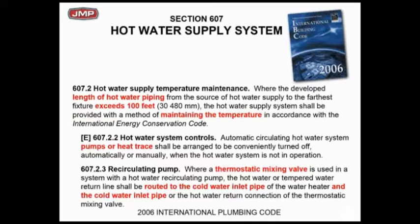The old IPC/ICC code that most states still follow said 100 feet between the point of recirculation and the fixture. The 2012 IPC code, which some states have adopted, shows 50 feet. Bell and Gossett recommends nothing over 50 feet. Your local plumbing code may show a different number, so check your local code. A reasonable design today would probably be a 50-foot maximum runout between A and E, keeping in mind you're going to waste all that water down the drain.